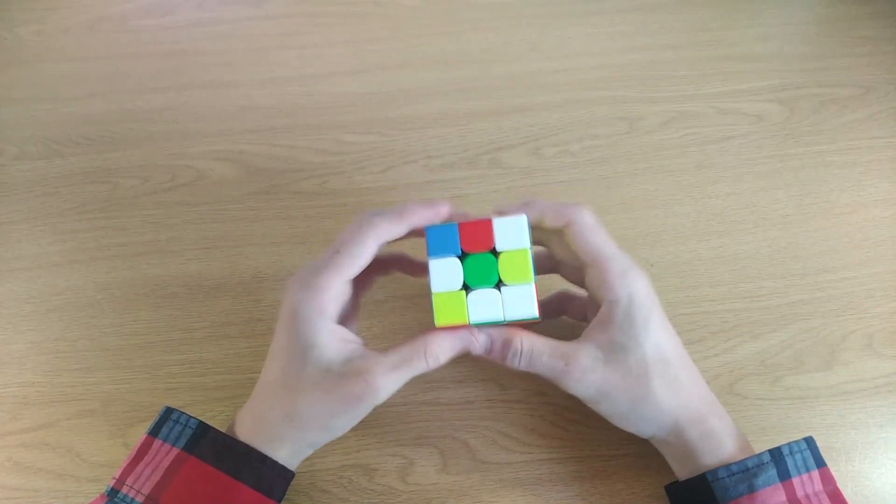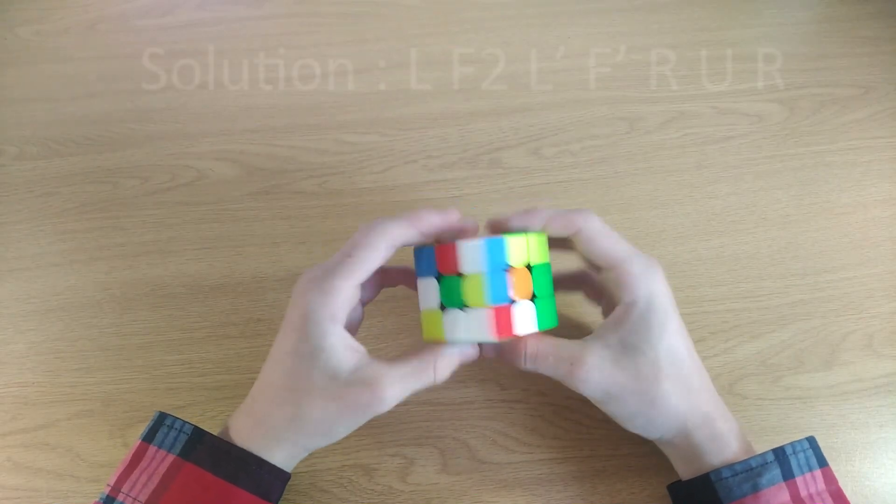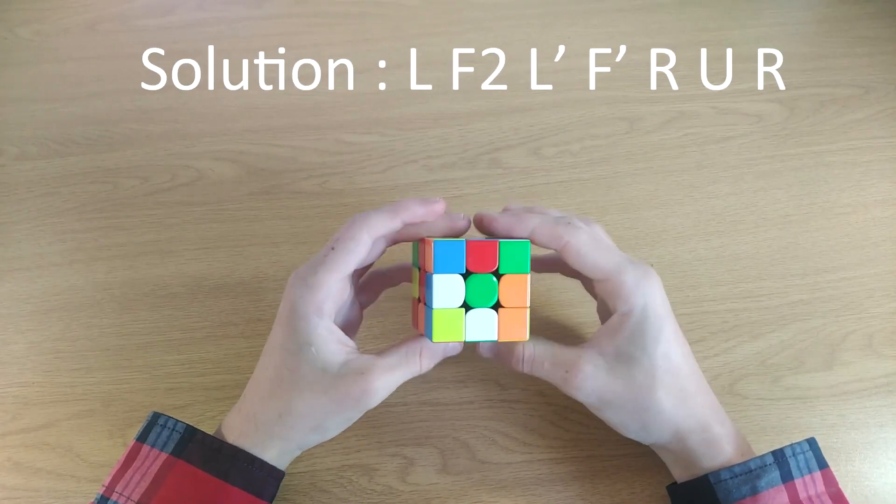Okay, so let's start with this one. In this specific case I would have first done, let's see, an L here, an L, then I would have done an F2.